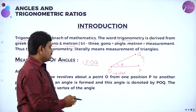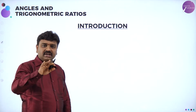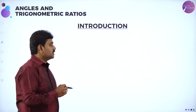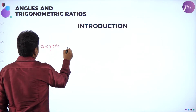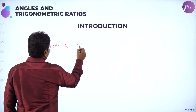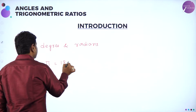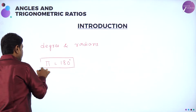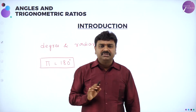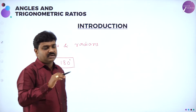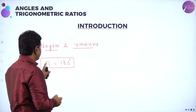We can also simply say angle O, where O is the vertex. Now we can measure angles in degrees and radians. In our syllabus we have two methods — one is degree and the other is radians. The basic relation is: pi radians equals 180 degrees. We have a derivation for this as well.